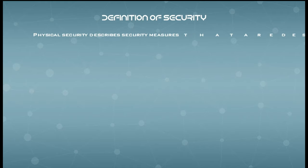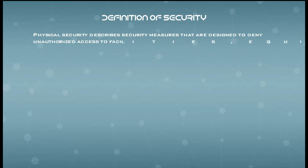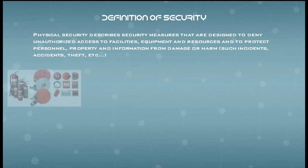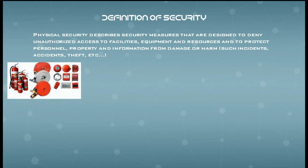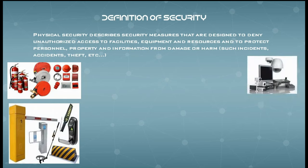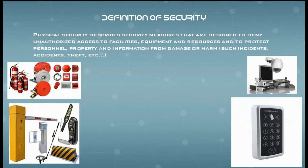Physical security describes security measures that are designed to deny unauthorized access to facilities, equipment, and resources, and to protect personal property and information from damage or harm such as incidents, accidents, theft, etc. Denying unauthorized entry means not allowing any outsider without a valid reason to enter authorized areas of the building. We create barriers to make it very hard to reach the core area of the organization — for example, a server room or hub room in a corporate company, or a finished product storage area in a manufacturing facility.